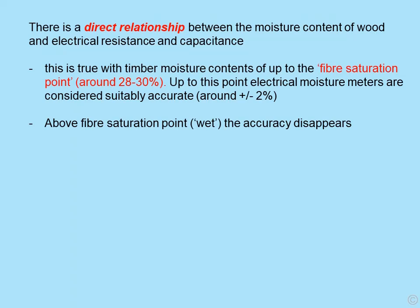It should be appreciated that there is a direct relationship between the moisture content of wood and electrical resistance and capacitance, as used by some meters. This is true with timber moisture contents up to the fibre saturation point, around 28-30%. Up to this point, electrical moisture meters are considered suitably accurate — that is, around plus or minus 2%.